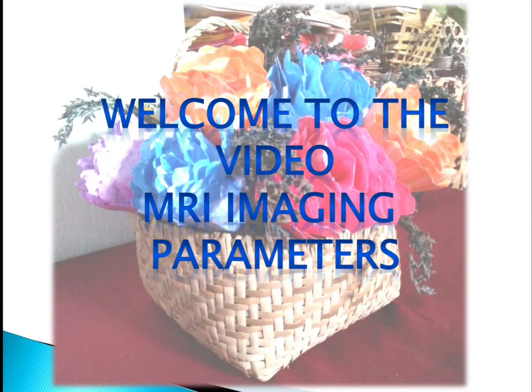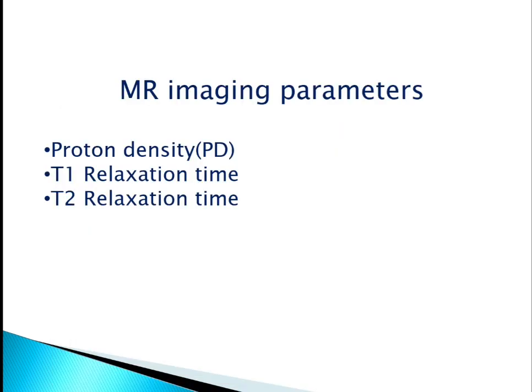Hello everyone and welcome to the video. In this video we shall be discussing about MRI imaging parameters. Generally we have three kinds of MR imaging parameters: proton density, which may be represented as PD, T1 relaxation time, and finally the T2 relaxation time.